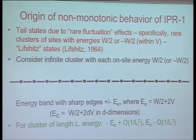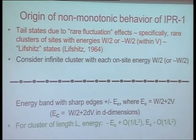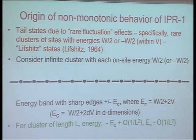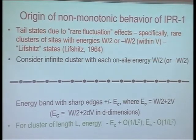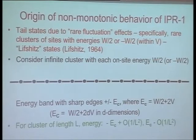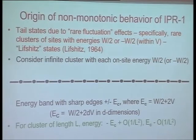In fact, if you let this chain go to infinity with each site being at W/2, you find that there's an actual band edge at W/2 + 2V in one dimension. And in any dimension, you can show it's W/2 + 2DV, where D is the dimensionality. Because all you've got is all sites at W/2, and then you have an ordered problem, and you know what the band edge for the ordered problem is, which is exactly this.